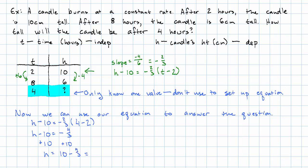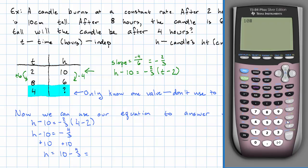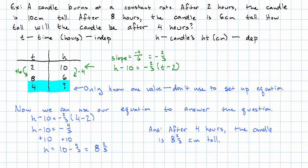Which is, let's see, 10 minus four-thirds. That's going to be eight and some fraction. Let's find out what the fraction is. We'll take the fraction part of our earlier answer and convert it to a fraction, two-thirds. What's the answer to our question? After four hours, the candle is eight and two-thirds centimeters tall.